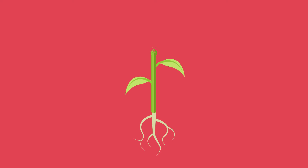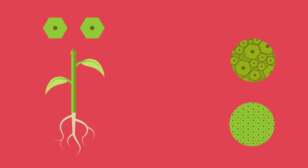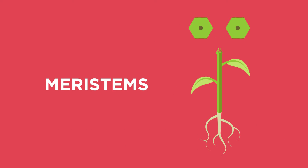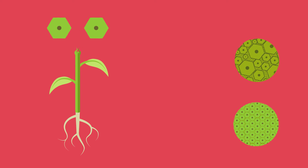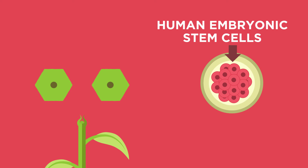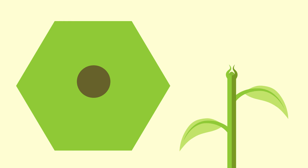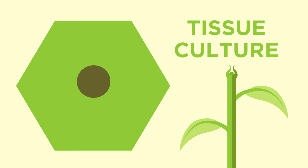Unlike humans, adult plants retain the ability to use stem cells to form all types of specialised cells. Plant stem cells are found in regions called meristems, which are located in the tips of growing roots and shoots. They can differentiate to form any type of specialised plant cell, such as xylem or phloem. So plant stem cells always act like human embryonic stem cells. If you take single cells from meristem tissues, you can grow a whole new plant from it. This is the basis of tissue culture and is used for cloning plants.